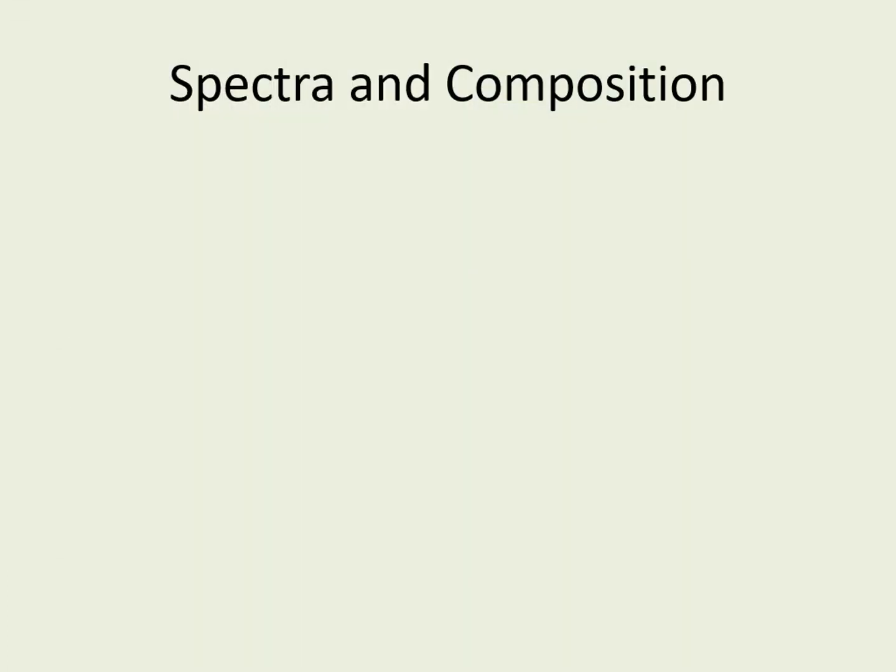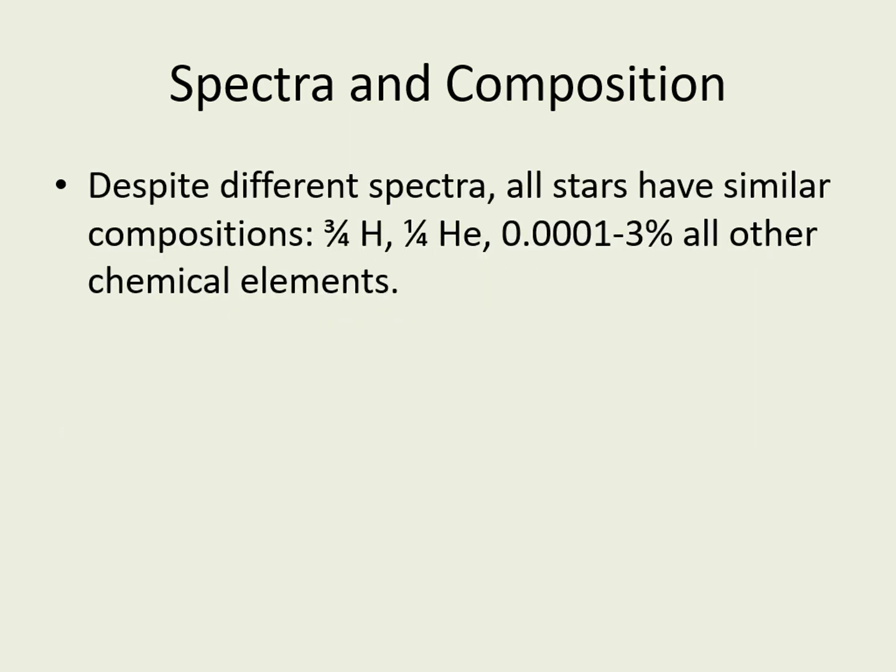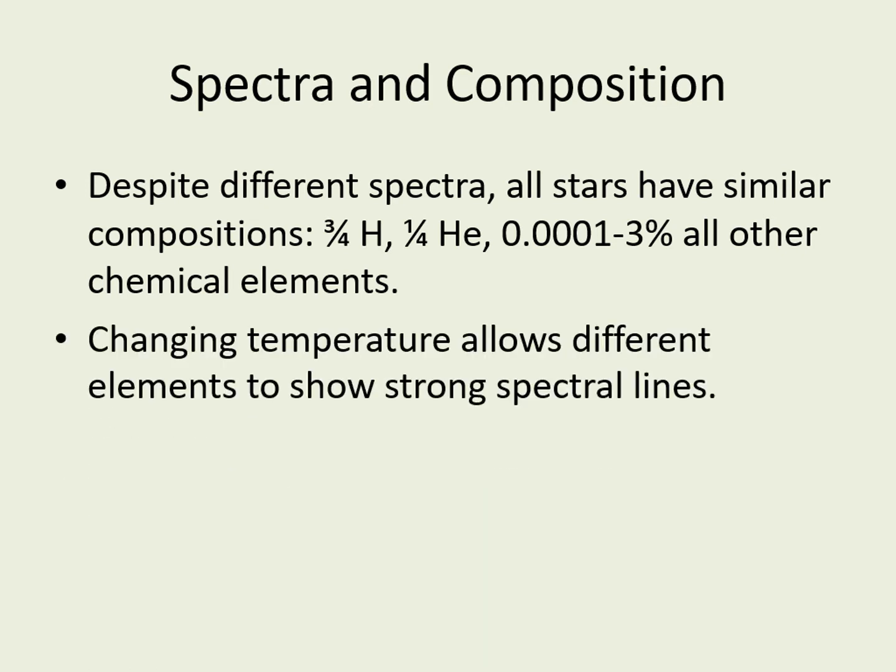At the start of the course, we described how Cecilia Payne-Gaposchkin worked out the composition of stars using their light. What she found was that all stars have basically the same composition — three-quarters hydrogen and one-quarter helium, with a few percent or less of all the other chemical elements. You should be wondering how that works, if there are so many different types of spectra we see.